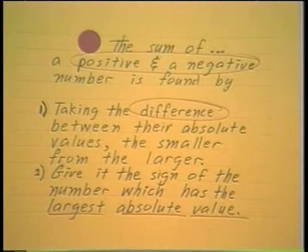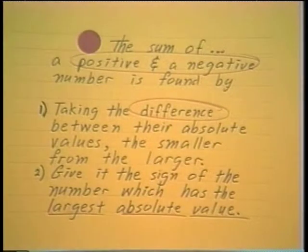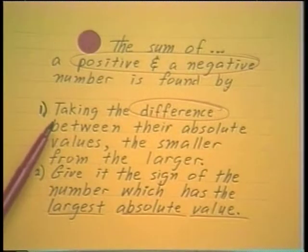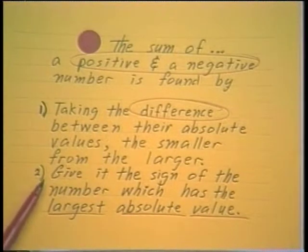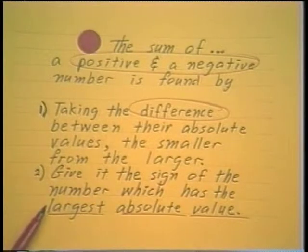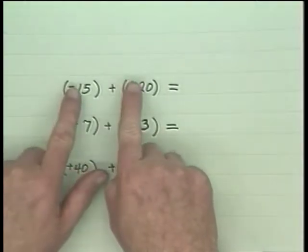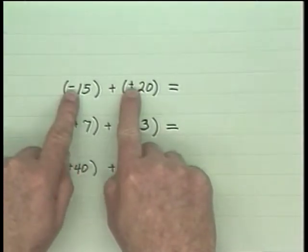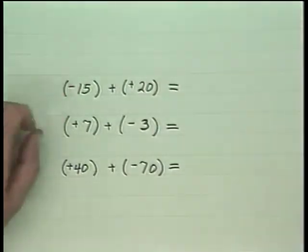When adding a positive and a negative — or in short, unlike signs — the number is found by taking the difference between their absolute values, smaller from the larger. Then give it the sign of the number which has the larger absolute value. For example, if you're adding unlike signed numbers, you take the difference between their absolute values, smaller from larger. So 15 from 20 is 5. Then ask which of the two is the larger, and give it its sign.